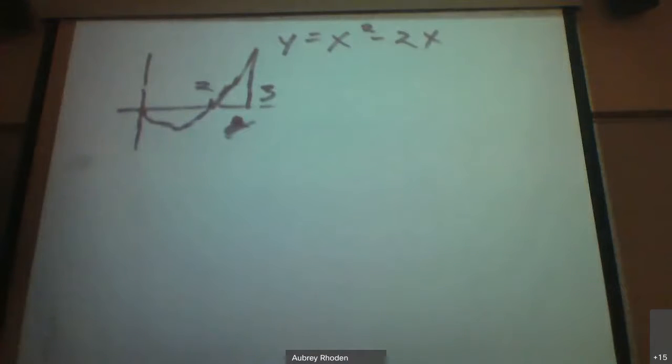Okay, so this first problem is going to be an area between the x axis and the function y which equals x squared minus 2x.